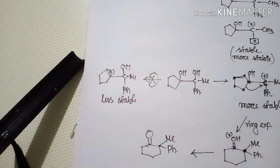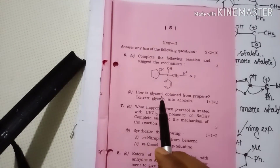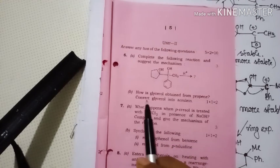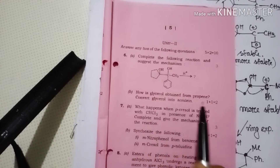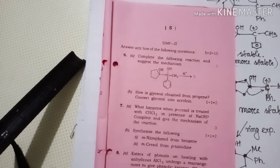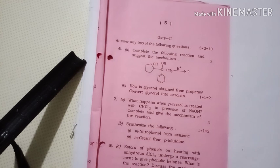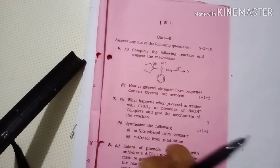The next question is 6B. It is a product. Pinacol-pinacolone rearrangement reactions — mechanism is discussed. Next question: give the glycerol obtained from propene. Convert the glycerol into acrolein. This is a 1+1 mark question. The next question: from propene, obtain glycerol, and from the glycerol, make acrolein.